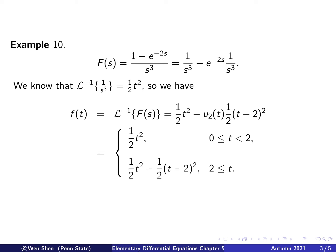We can write it out piecewise on intervals where the function is continuous. The discontinuity is at t equals 2. For 0 less than t less than 2, u₂(t) is 0, so we just have the first term: one-half t squared. When t is greater than 2, u₂(t) is 1, and we get one-half t squared minus one-half (t minus 2) squared. So clearly f of t is a piecewise-defined function and is discontinuous at t equals 2.